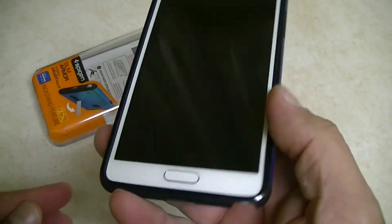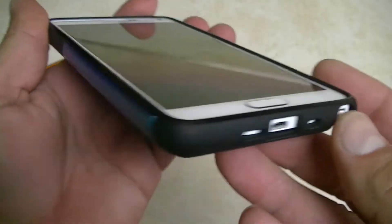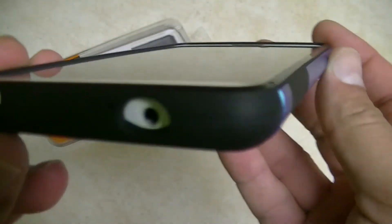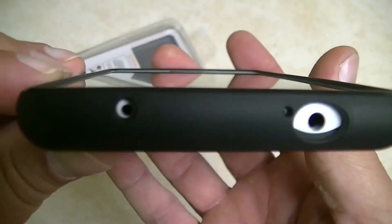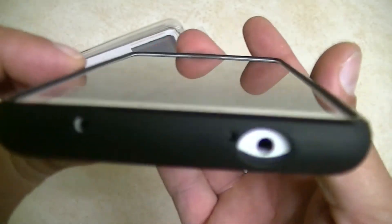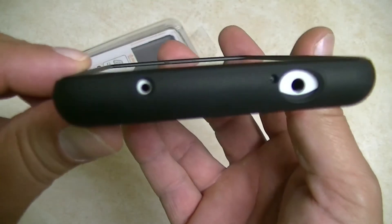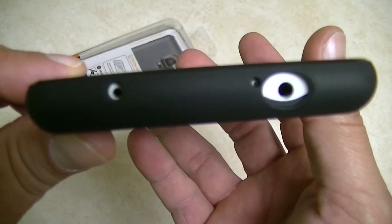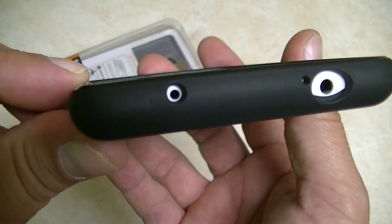And let's take a look at the case around. So as you guys can see, we get some protection for the screen. Here on top, we see access to the audio jack, microphone, IR blaster.